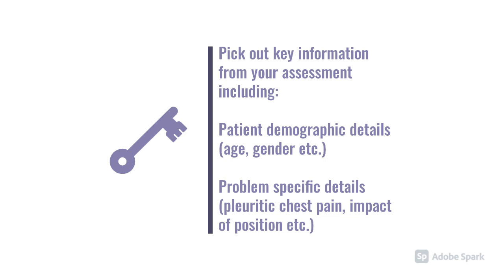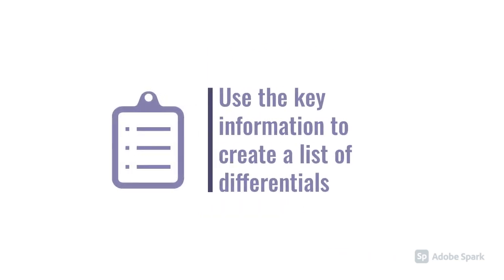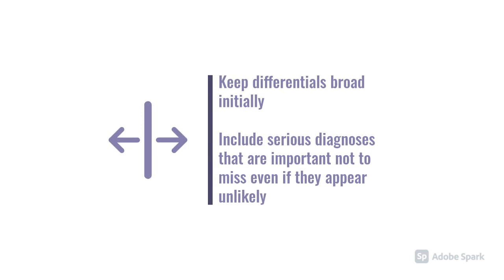You also need to identify problem-specific details that are going to sway your differential diagnosis. For example, if you're seeing somebody with chest pain, you want to know: is it pleuritic, which might suggest a respiratory cause? Is it present in a particular position, which might sway you towards pericarditis or reflux? Through those key bits of information you've gathered, you need to create a list of differential diagnoses. I'd always advocate keeping this list broad initially, including things that are very likely but also things that are less likely but quite serious and that you don't want to miss.